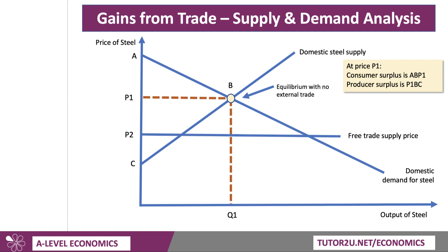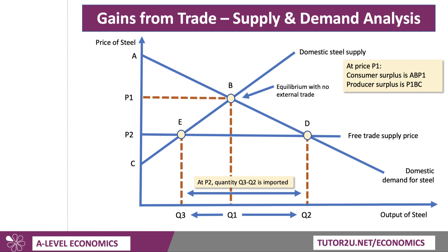Now, if we can import steel at a much lower trade price P2, what happens is that consumers will now want to buy more steel — they can get it more cheaply, and their real purchasing power has gone up. So we move from Q1 to Q2 in expansion of demand because steel is now cheaper. On the other hand, domestic steel producers, if they're price takers, won't be able to sell as much steel at that price. Their output is likely going to contract from Q1 to Q3. The gap between Q3 and Q2 is likely to be imports of steel, because other countries can produce steel at a lower price.